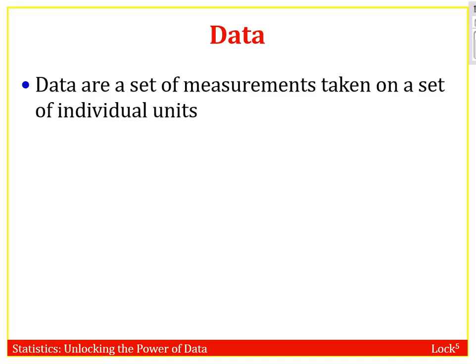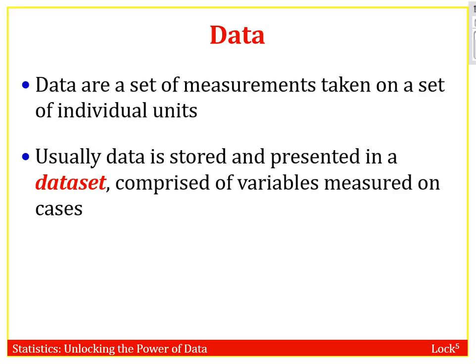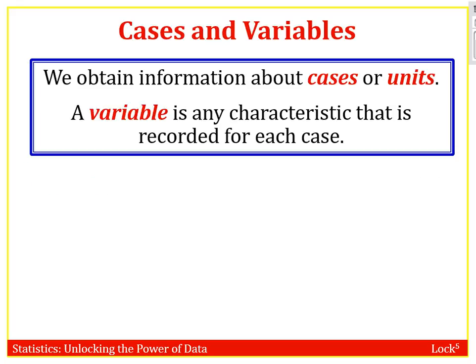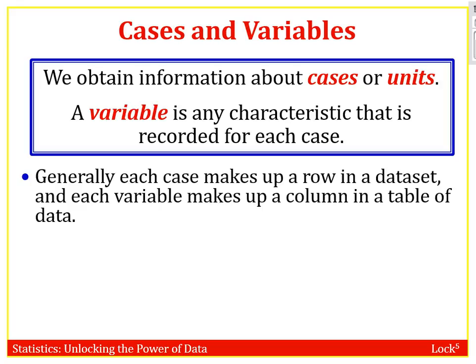We need to go ahead and get some measurements on individual units. Now, if those individuals are people, we say those are individuals. If those are inanimate objects, then we describe them not as individuals but as units. Data is typically stored in data sets. What we're obtaining information on are the cases or the units, and what we are collecting from those cases — or if they're people, individuals — are referred to as your variables. So if you're recording height, weight, blood pressure, or something like that.